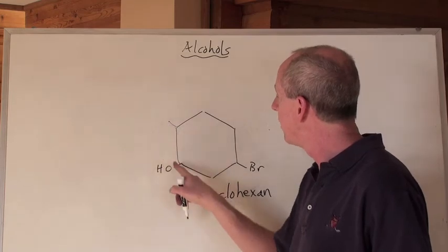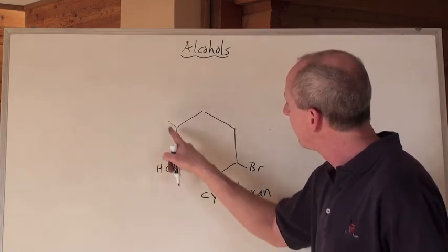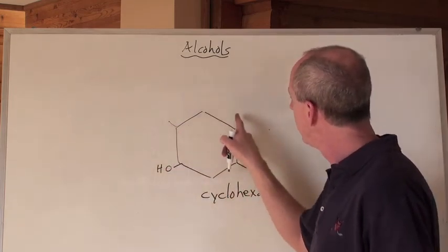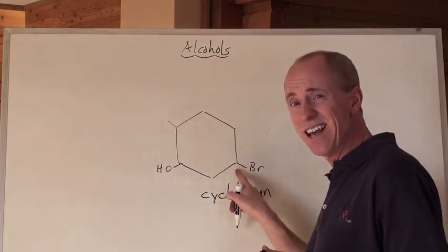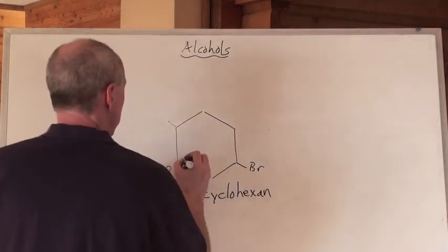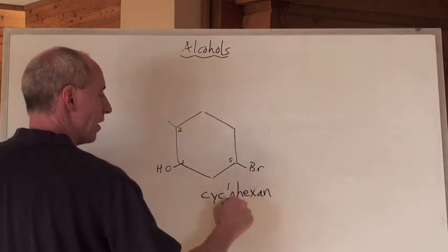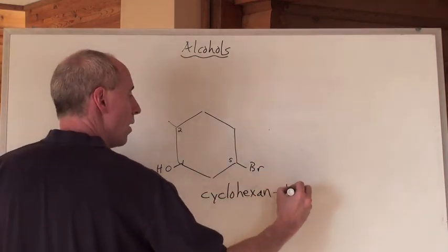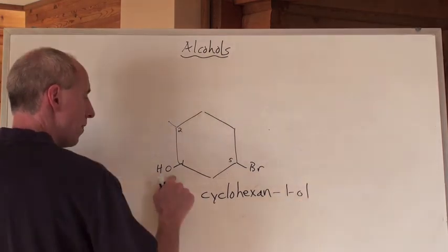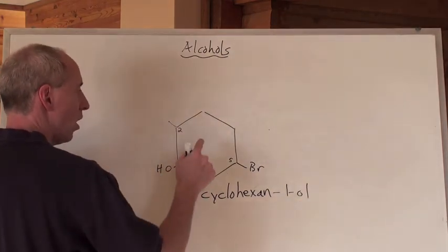That means then, if that's the one, then that's the two. Then that's the three, four, that's the five. See that? So then that makes that the one, and then two, and then that's the five. And so that's a cyclohexan, one, ol. Then we've got a methyl and then a bromo.